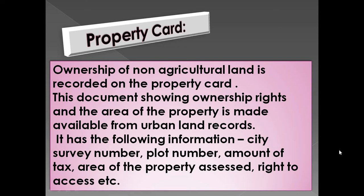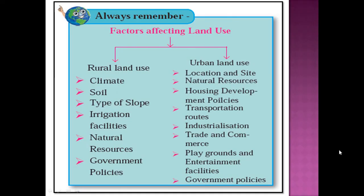You can study figure 6.4 — general land use and its changes in India. Now let us know about the factors affecting land use. Factors affecting rural land use are: climate, soil, type of slope, irrigation facilities, natural resources, and government policies. Factors affecting urban land use are: location and site, natural resources, housing development policies, transportation routes, industrialization, trade and commerce, playgrounds and entertainment facilities, and government policies.